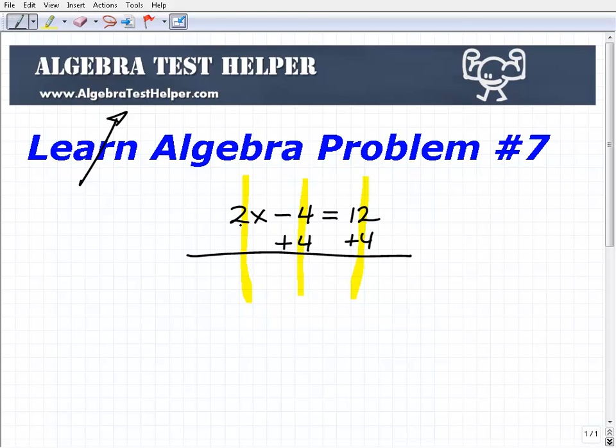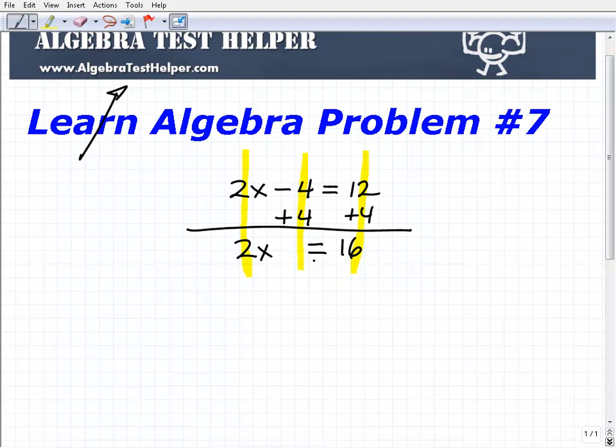So I get 2x plus nothing is 2x. Negative 4 plus 4 is 0, so I'm not going to write anything there. That's equal to 12 plus 4, which is 16. I'm leaving some space here just to illustrate a point, but really I would write that 2x closer to the equal sign.